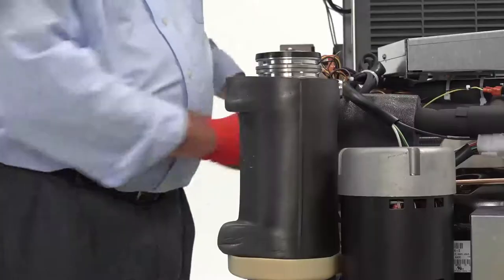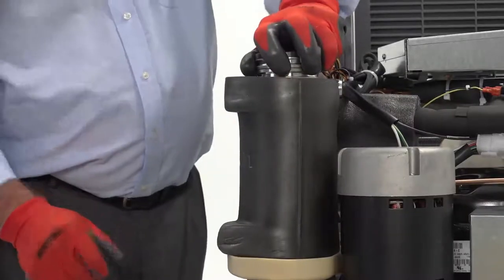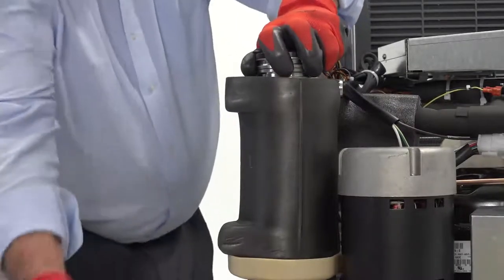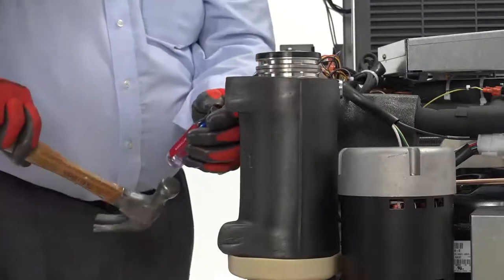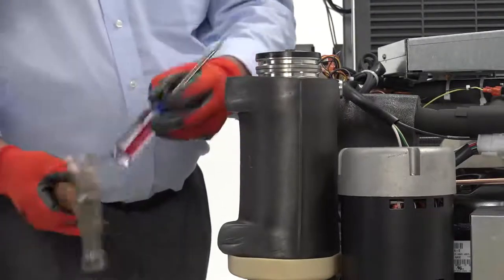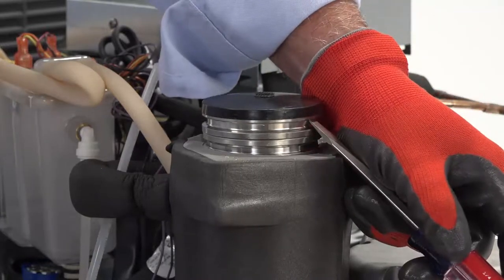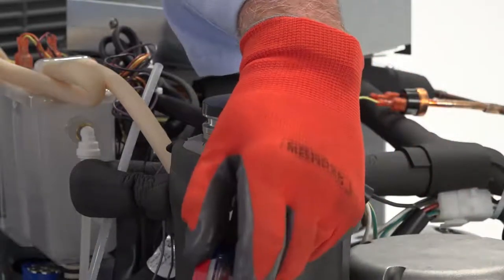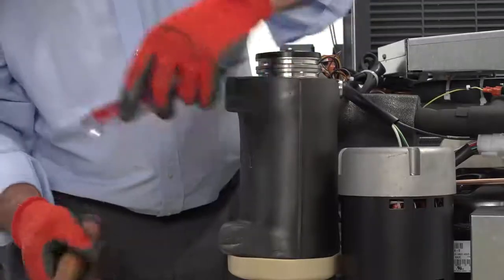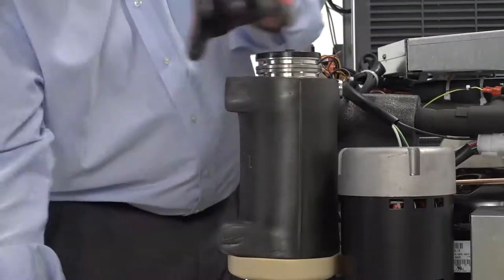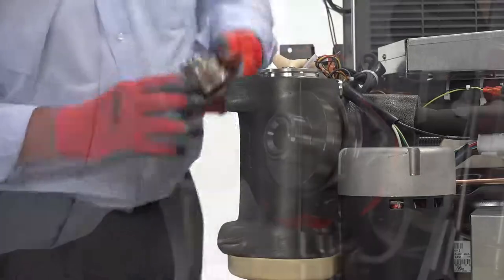Lift the top bearing assembly straight up with a slight rotating motion to remove. If the bearing assembly is stuck, place the tip of a chisel or screwdriver under the upper flange of the top bearing housing and strike vertically with a hammer. Do not drive the chisel or screwdriver horizontally between the bearing housing and the evaporator flange as damage will result.